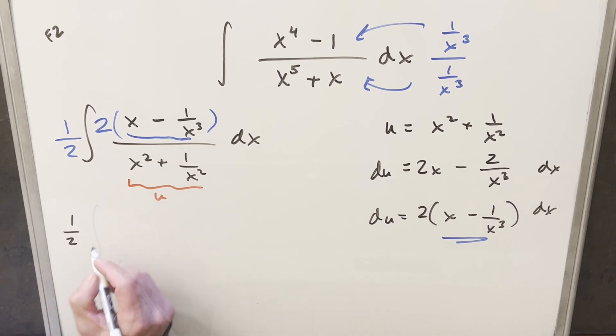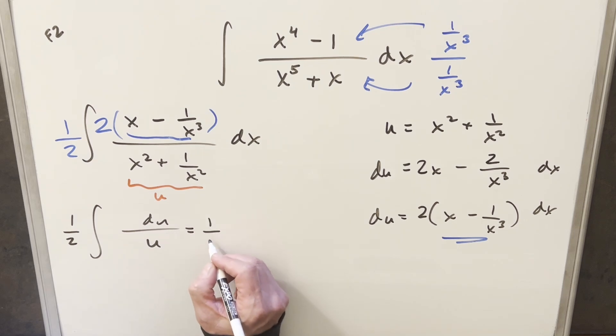And then I'll just go ahead with this. We're going to have our one half in front. Then we're going to have du here in the numerator. And this is just all going to be over u. But that's an easy integral. That's just going to be one half natural log absolute value of u. Then we can just go ahead and back substitute in order to finish this off.